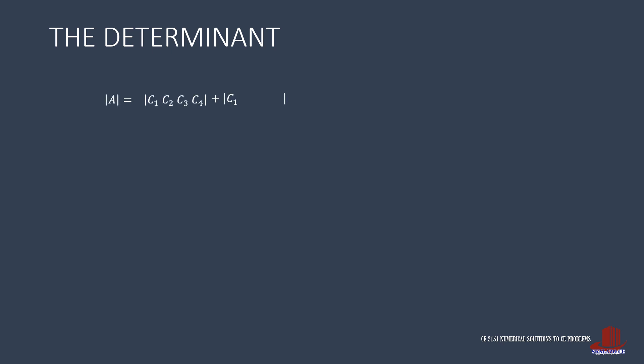After completing all three partial determinants, we just add them up: negative 66, plus negative 116, plus negative 17, giving the determinant of the 4x4 matrix as negative 199.